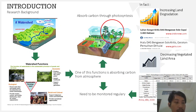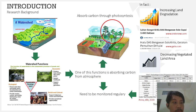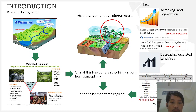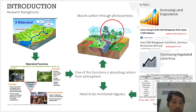The second phenomenon threatening watershed function is increasing land degradation. Land degradation indicates that there are many degraded areas without vegetation cover, which occurred due to exploitation and mismanagement of land. This condition has also happened in this watershed, and based on available data, there are currently 300 hectares of land classified as degraded land.